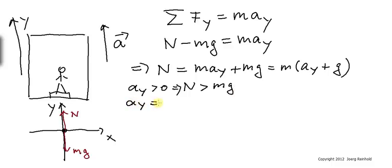Should ay be zero, that means the elevator is at rest or moving at constant speed, either up or down. Constant speed up or down both correspond to ay equals zero.